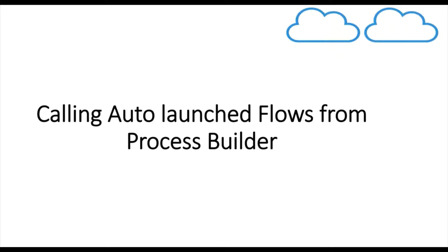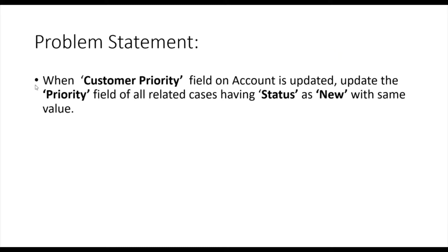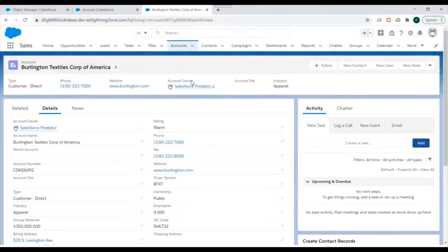We'll also see how we can pass parameters from Process Builder to flows. We have created a problem statement: when a Customer Priority field — a custom field on the Account object — is updated, update the Priority field of all related Cases on that account having a status of New, with the same value.